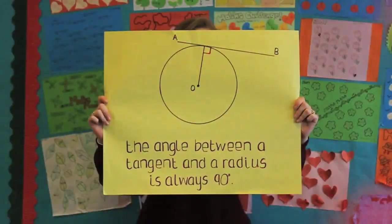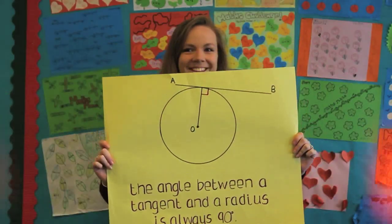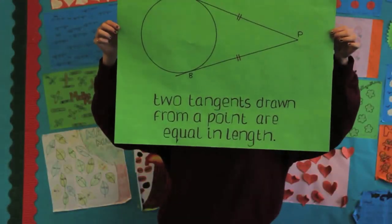The angle between a tangent and a radius is always ninety degrees. Two tangents drawn from a point are equal in length, and this is number two.